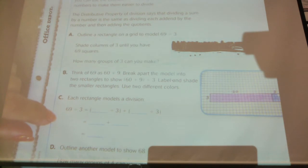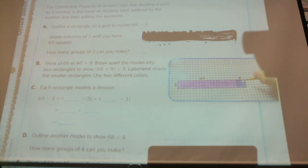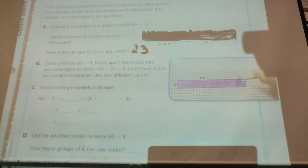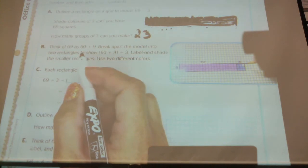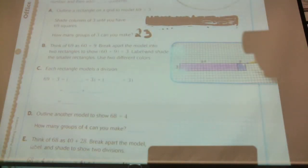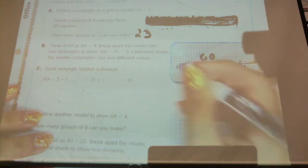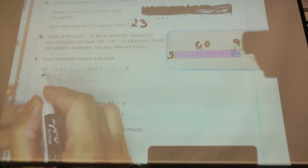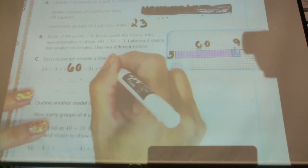Think of 69 as 60 plus 9. What are they planning to do with that, do you think? 60 plus 9. Does that look familiar to something I just did up here? So if I do 60 plus 9, I'm going to have this array that's 60 and 3, and then this is going to be 9 and 3, which is what they have up here. So I've done 69 divided by 3 could be 60 divided by 3 and 9 divided by 3.